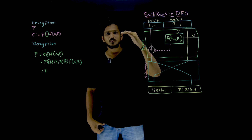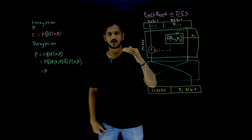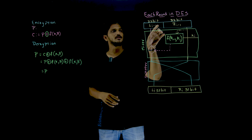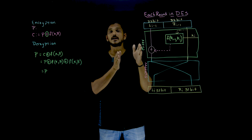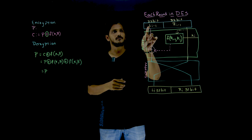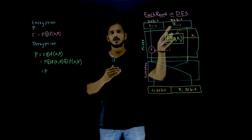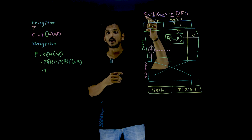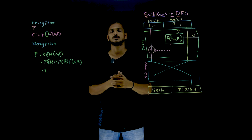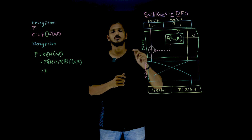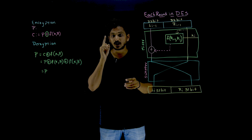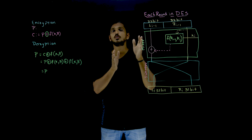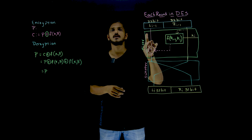Each round will take a 64-bit input as plain text and it is going to generate a 64-bit output. That is why this 64-bit input is divided into two halves — left half and right half. This is round i, that is why it is taking input from round i minus 1: L(i-1) and R(i-1), each 32 bits. Because it is using Feistel Cipher, we divide the input into two halves.